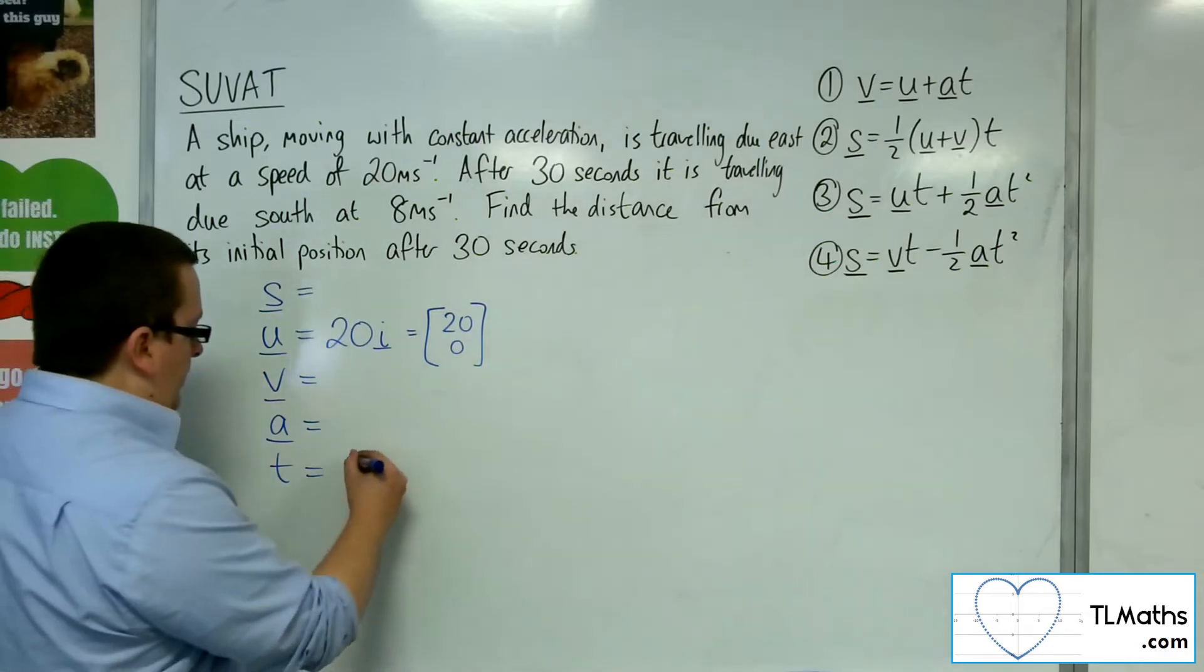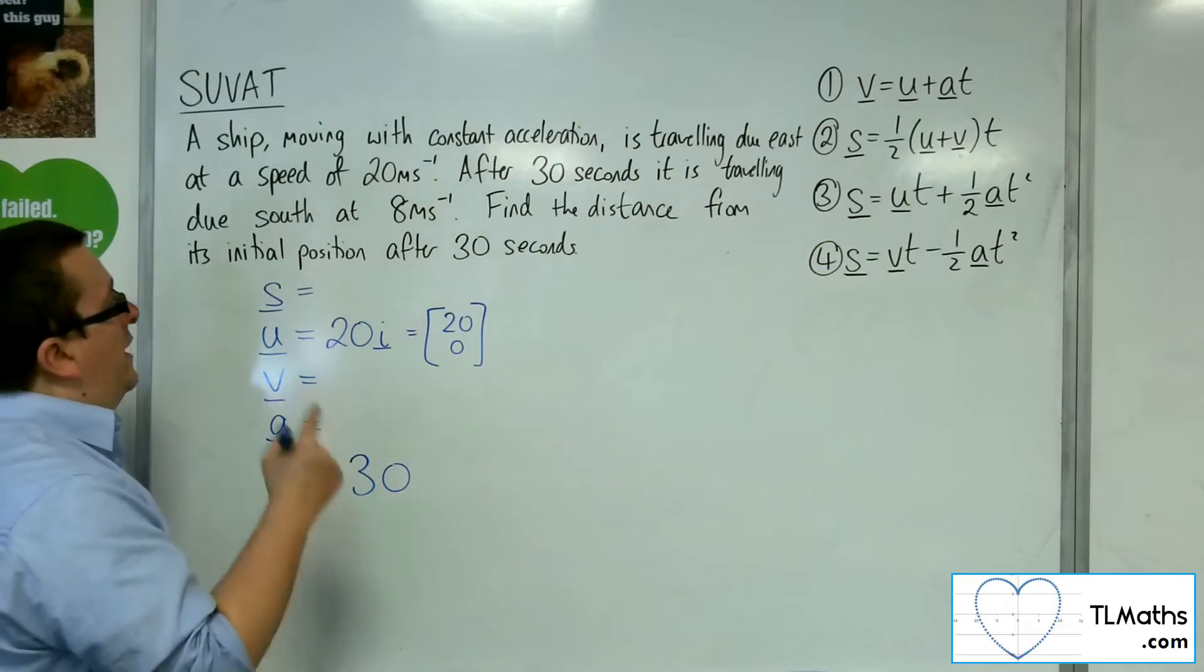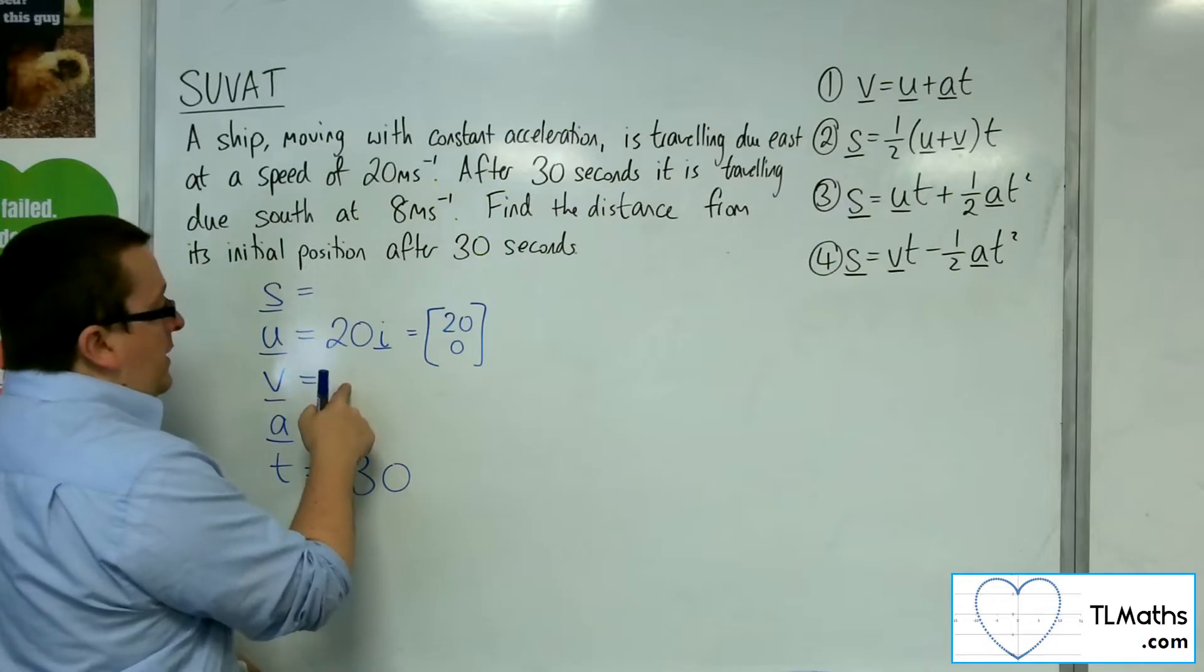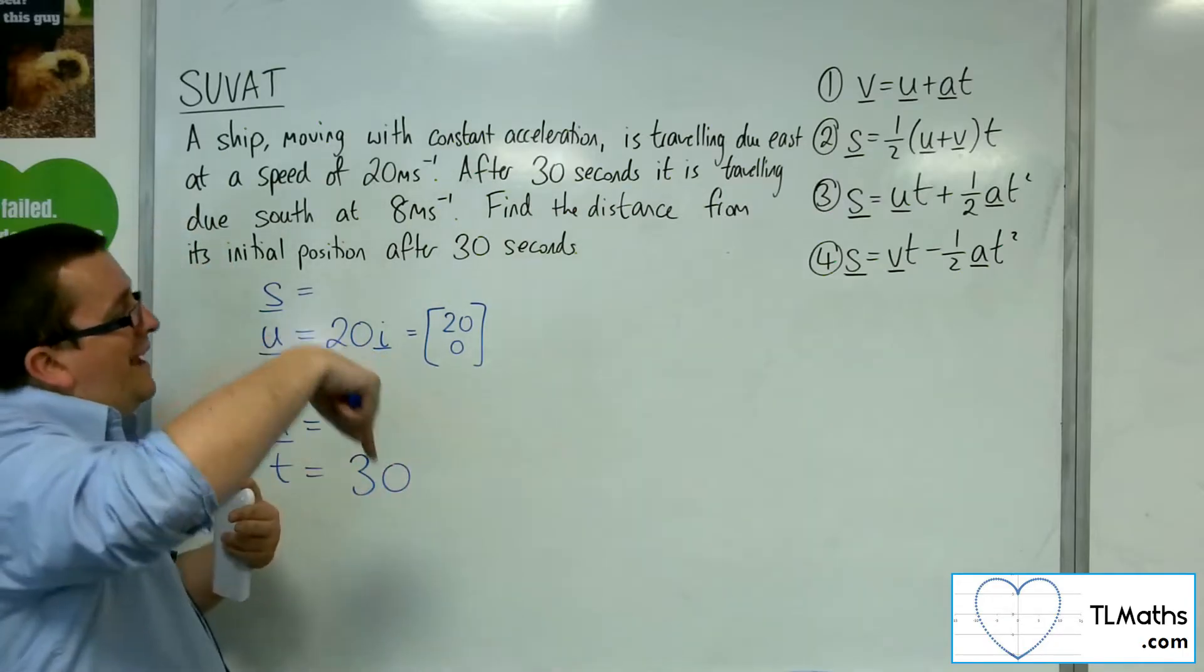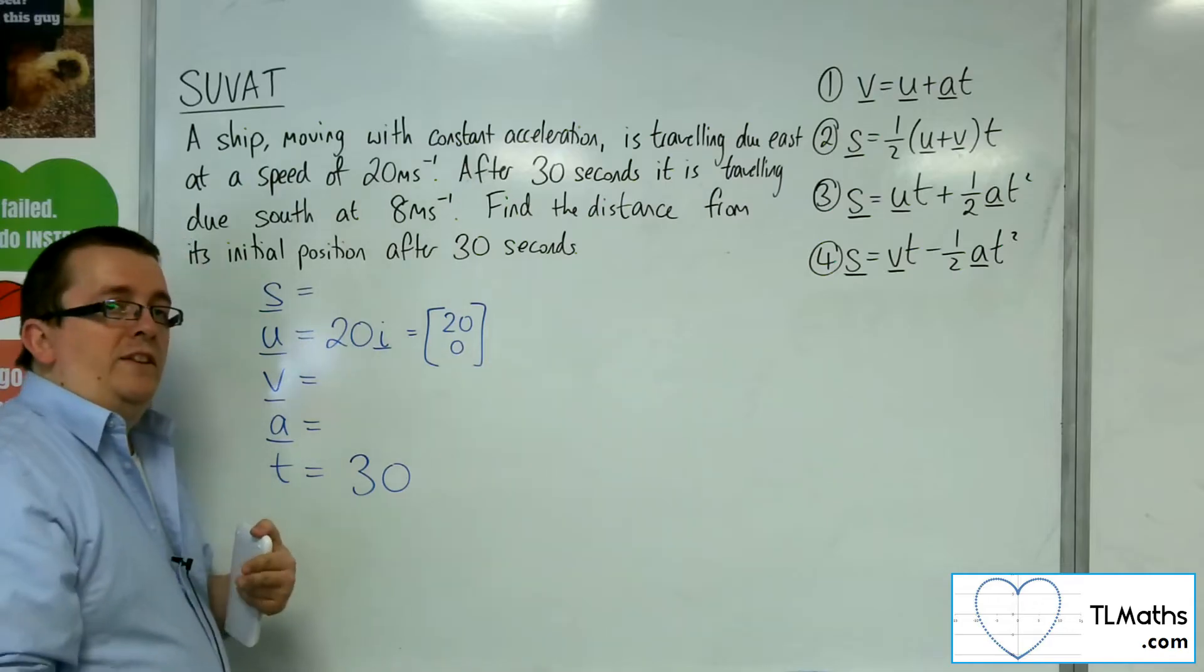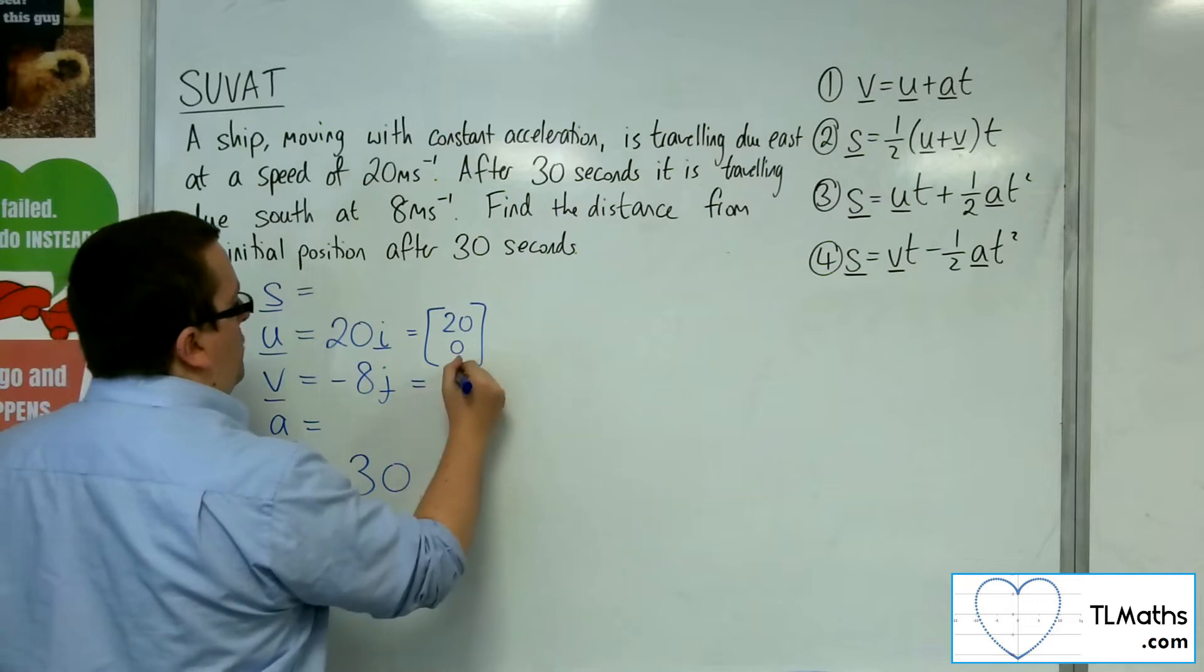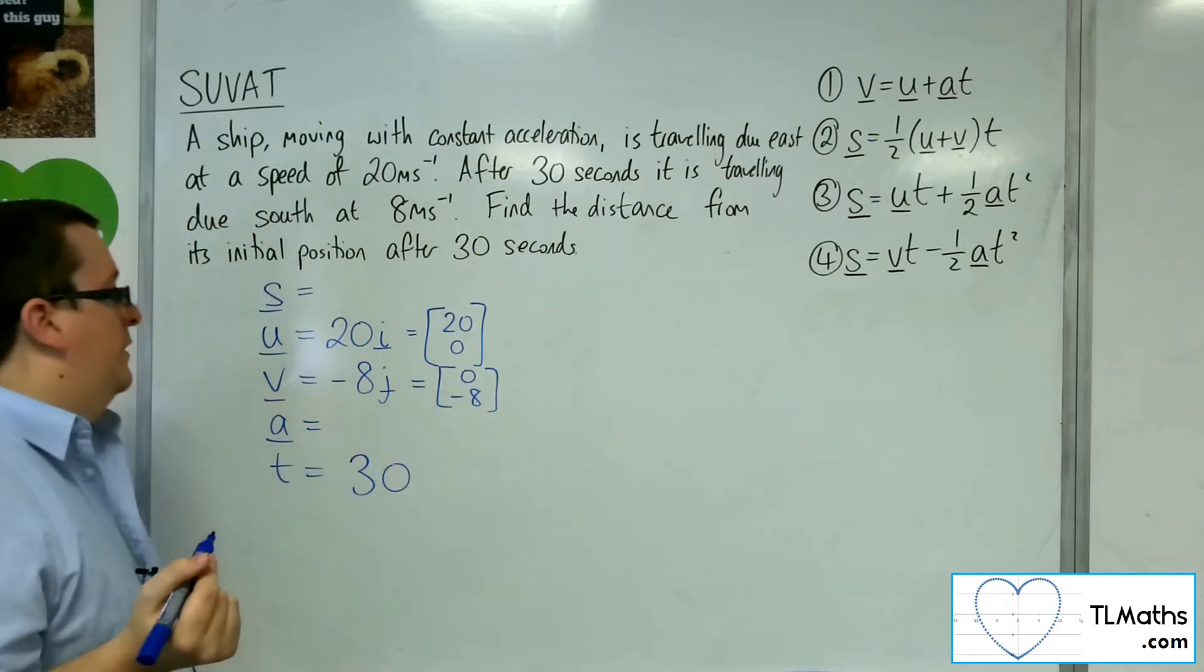After 30 seconds, so t = 30, it is travelling due south at 8 meters per second. If it's travelling due south, then we're not travelling anything in the i direction, but we're travelling 8 meters per second in the j direction downwards, so -8j. You could represent that using the vector (0, -8) if you preferred.